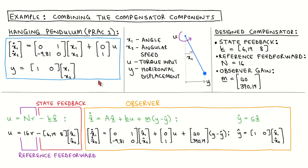We have previously designed the state feedback vector to place both the closed-loop poles at minus 4. We have designed the reference feed forward gain to let the output follow the reference input exactly in steady state. And we have designed the observer gain vector to place both the observer poles at minus 20, which are five times faster than the closed-loop poles. For this example, we put all the designed compensator components together.